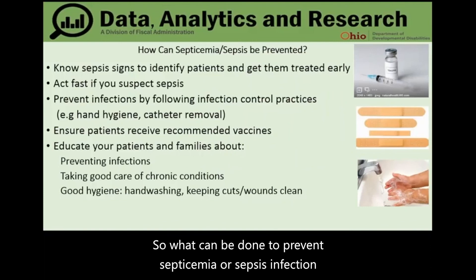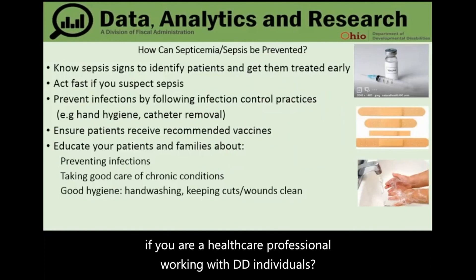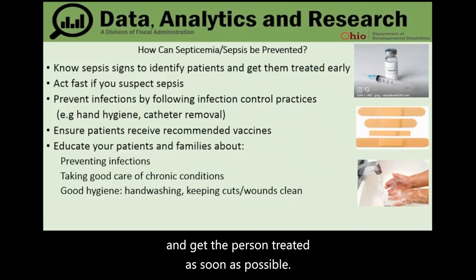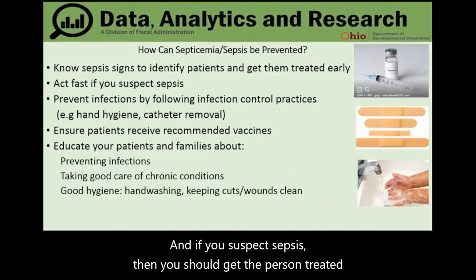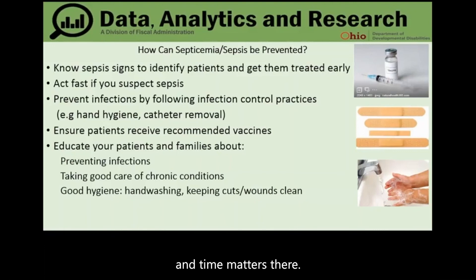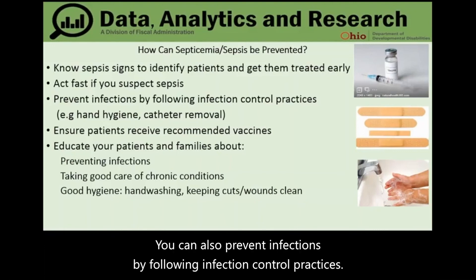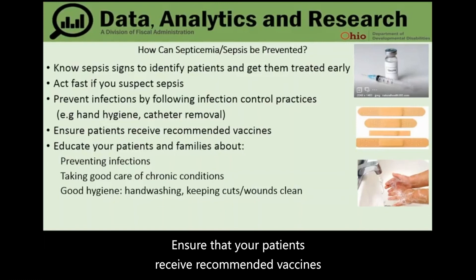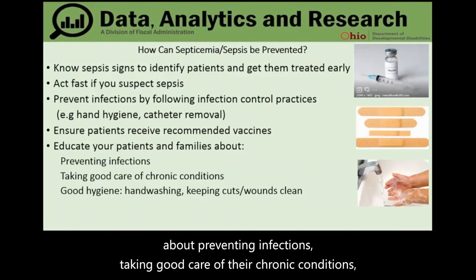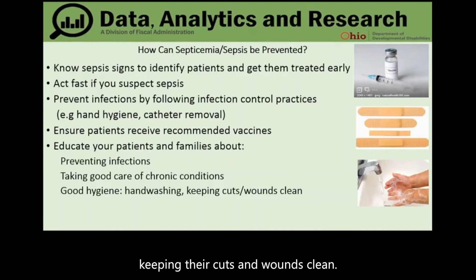To prevent septicemia when working with DD individuals, healthcare professionals should be alert to the signs and symptoms of sepsis and get the person treated as soon as possible, since sepsis is a medical emergency where time matters. Other prevention strategies include following infection control practices, ensuring patients receive recommended vaccines, and educating patients and families about preventing infections, managing chronic conditions, and practicing good hygiene such as hand washing and keeping cuts and wounds clean.